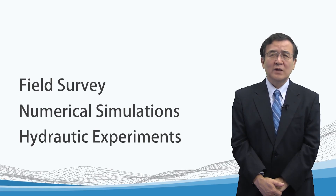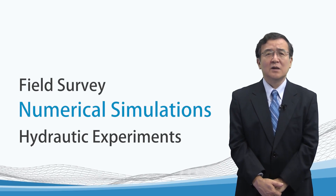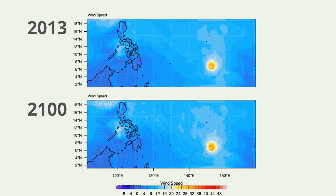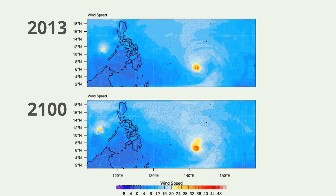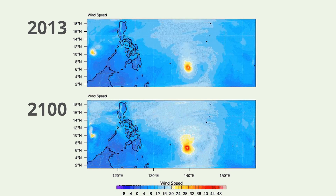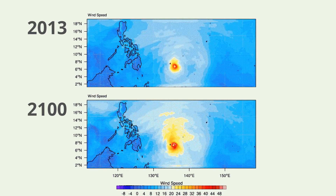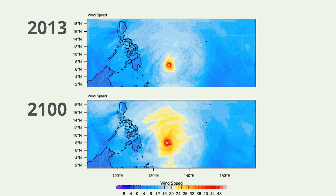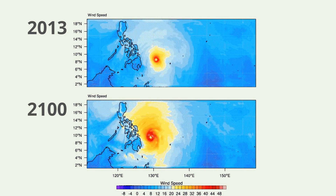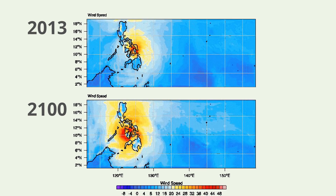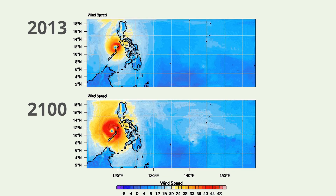The second one is numerical simulations, which gives us detailed images of tsunami or typhoon behaviors. This is a calculated typhoon route in the Philippines after factoring global warming.